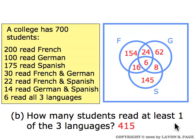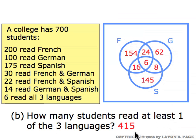How many students read at least one of the three languages? That would include everybody who's in any of the three circles. The total of all those numbers adds up to four hundred and fifteen.